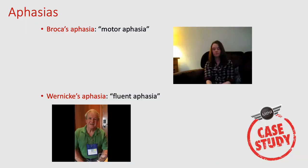Damage to these language centers results in aphasia — loss of ability to understand or express speech. There are two types: Broca's aphasia, or motor aphasia, where damage to Broca's area means you lose the ability to form words. You can write and understand others, but you physically can't speak what you want to say — which is very frustrating. On the flip side, Wernicke's aphasia — or fluent aphasia — results from damage to Wernicke's area. You can't understand words you see or hear, but you can speak fluently — just producing a string of nonsense words.